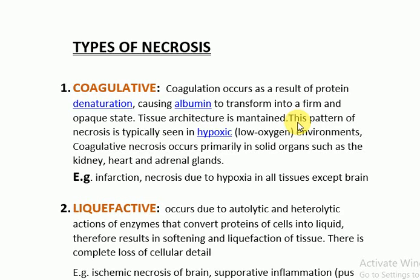In today's lecture we will be discussing the types of necrosis. Number one is the coagulative type of necrosis. Coagulation occurs as a result of protein denaturation. The basic mechanism in coagulative necrosis is protein denaturation, causing albumin to transform into a firm and opaque state.